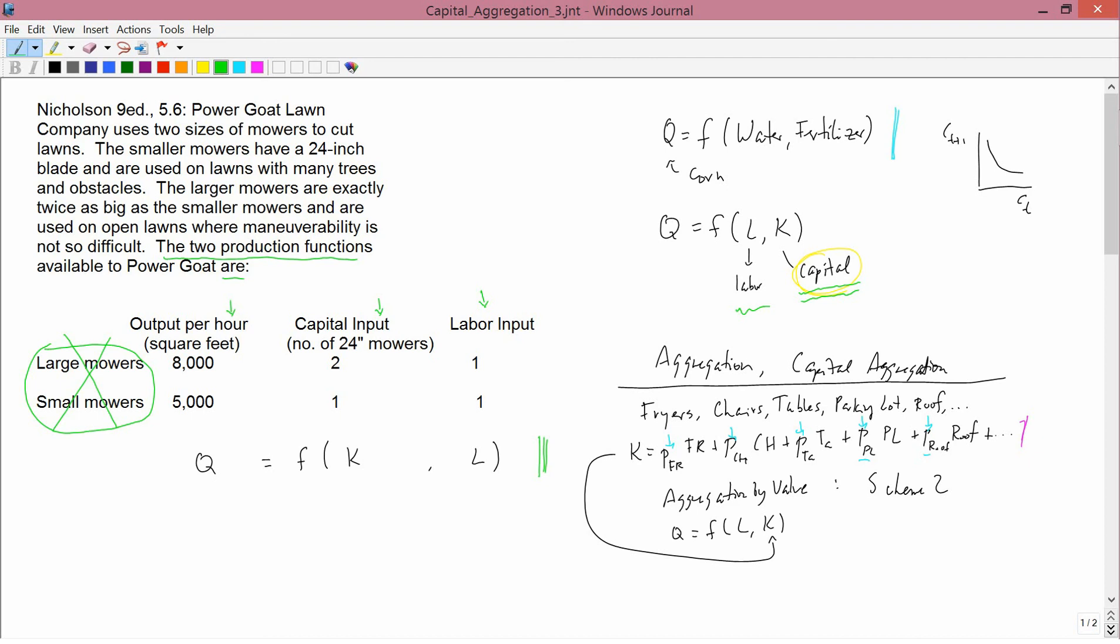You get 8,000 square feet per hour using one unit of labor input and two units of capital input measured as a number of 24-inch mowers. But as we know from the problem statement, that doesn't really mean two 24-inch mowers. It means one 48-inch mower. But what the table says is two 24-inch mowers. And if you had one person and two 24-inch mowers, you're not going to get 8,000 square feet per hour.